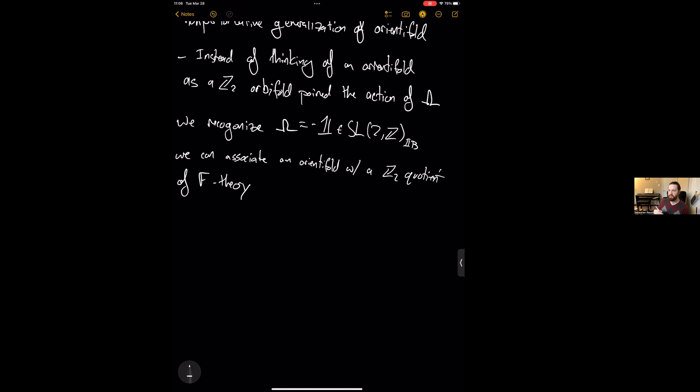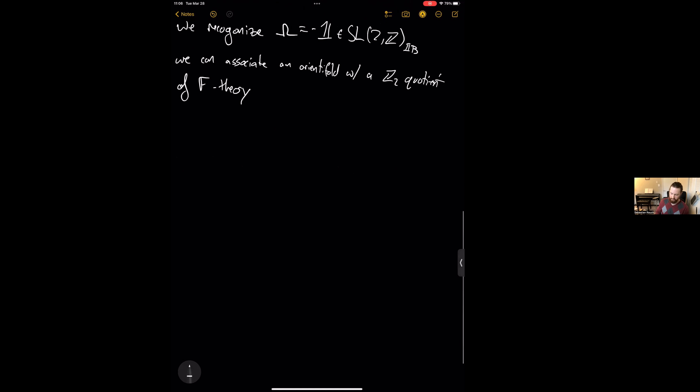So we generalize by taking a ZK orbifold of spacetime paired with a ZK action of SL2Z. So in this case the ZK action is generated by something I'm going to call rho K. And in particular this being a ZK action means that rho K to the K is of course one.